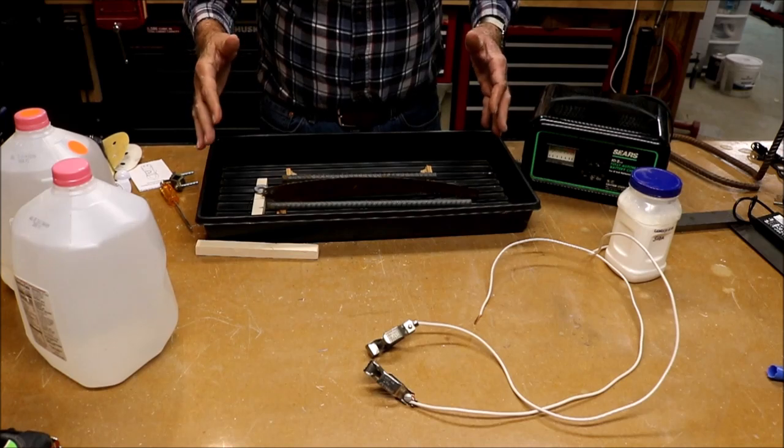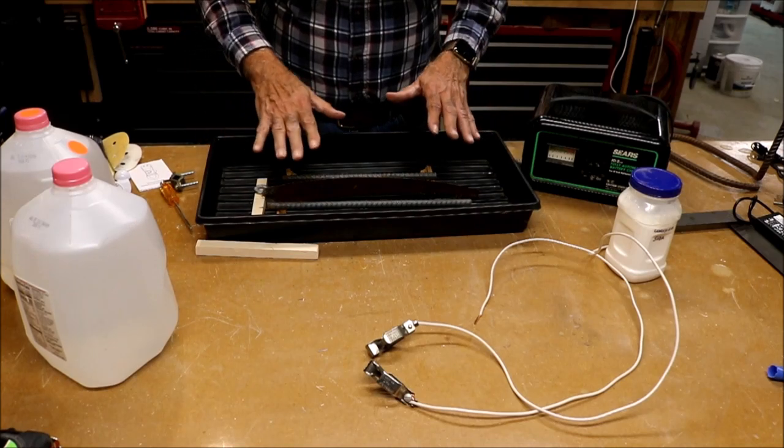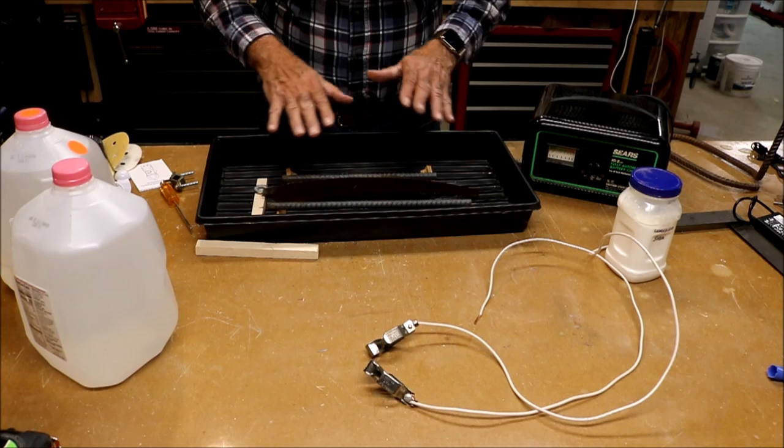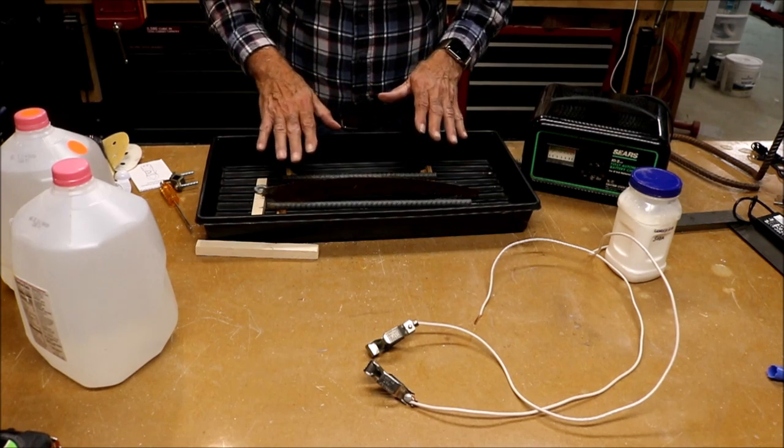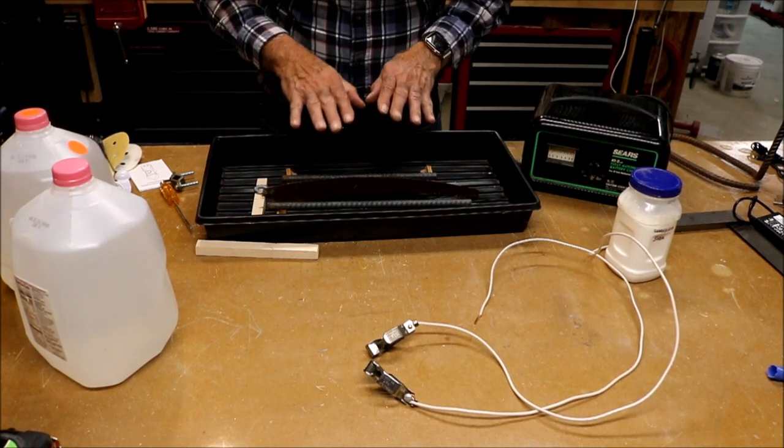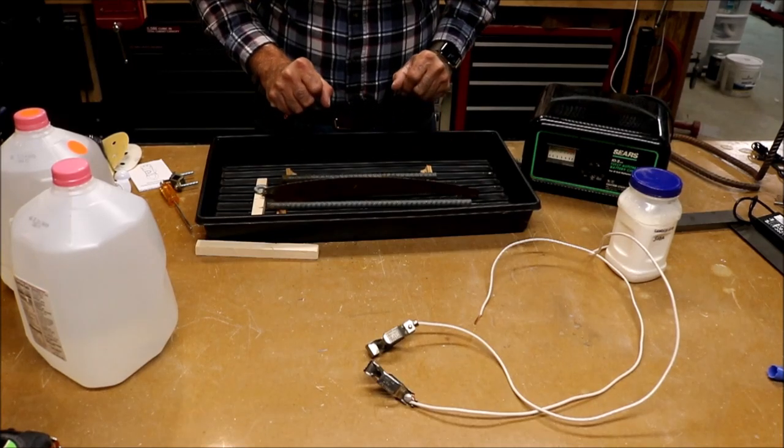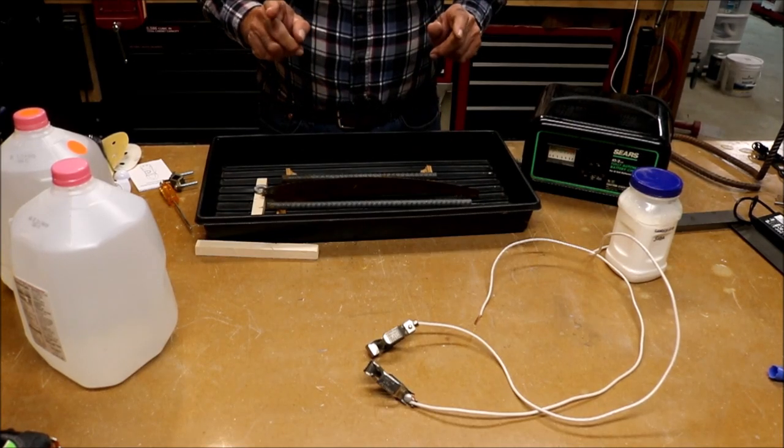You can use anything that's non-conductive as long as it's deep enough to hold the part that you're going to take the rust off of. The part that you have must be submerged totally in the liquid.